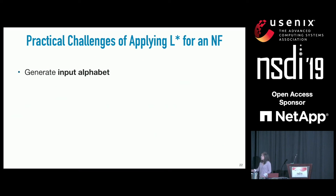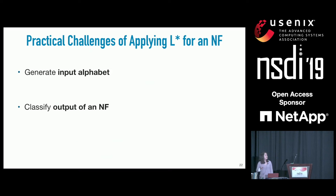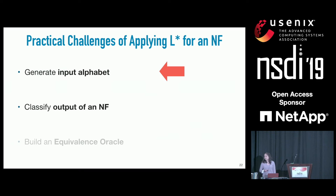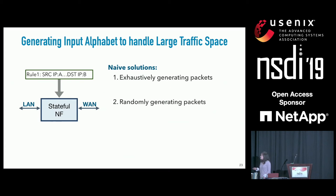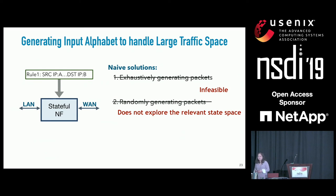There are practical challenges in using L* for an NF. First, we need to generate the input alphabet, which is effectively the entire space of IP packets. We also need to classify the output of an NF. A naive solution would exhaustively or randomly generate inputs; the first is clearly infeasible, while the second is inaccurate because it won't explore the relevant state space of the NF.